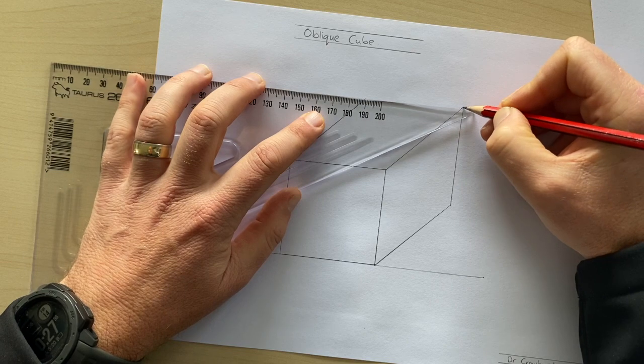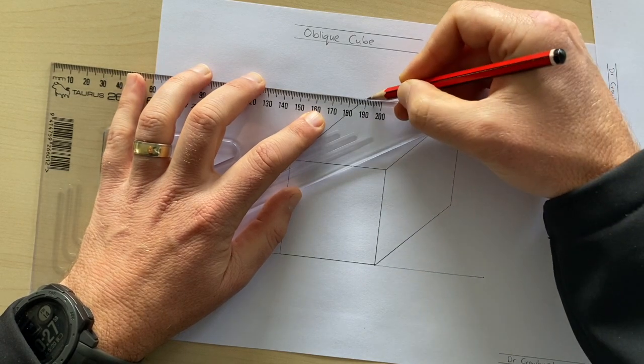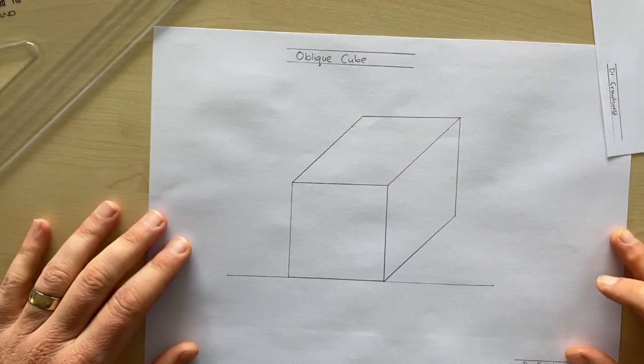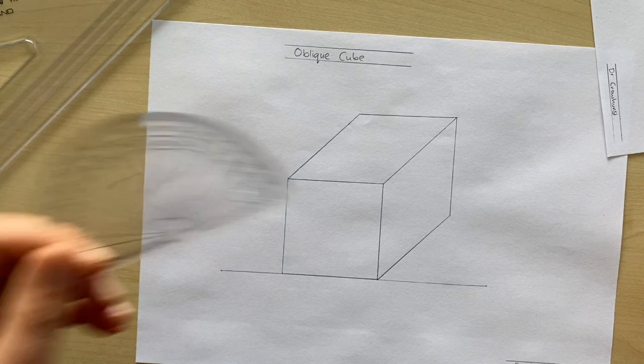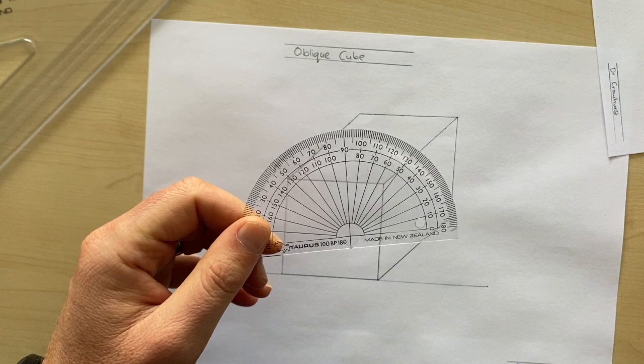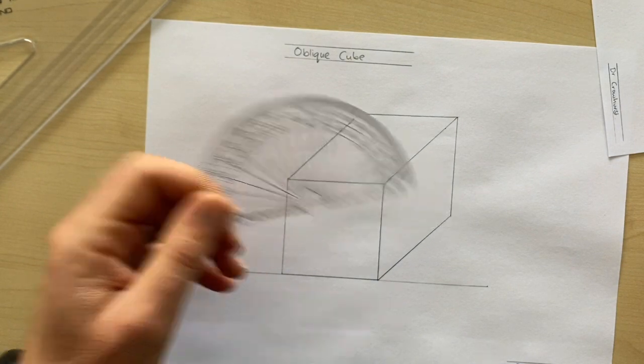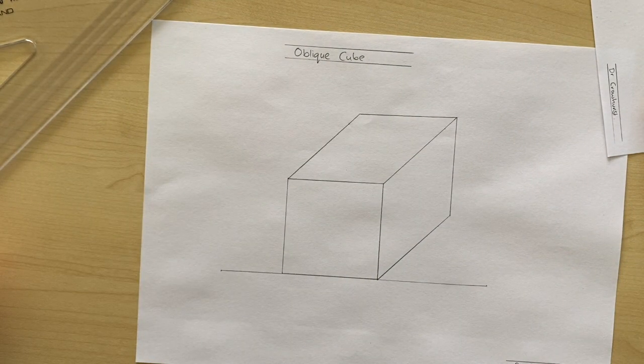Do the same there. And there you have an oblique cube where my primary tool that I've used to get the angles right is a protractor. Good luck. Thank you very much.